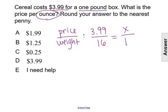We can cross-multiply to solve this proportion. We would have 16X. 16 times X equals 3.99 times 1, which is just 3.99. We'll divide both sides by 16, which gives us a value of X of approximately...